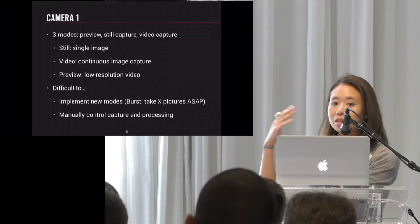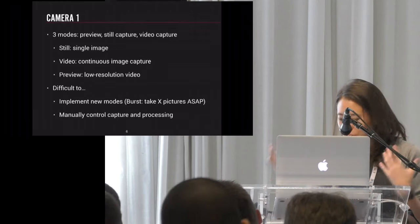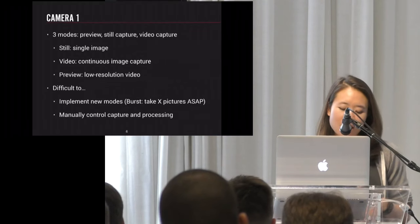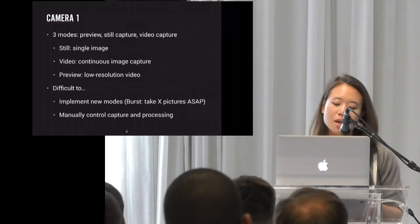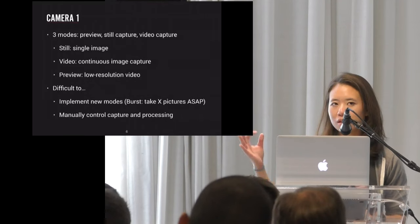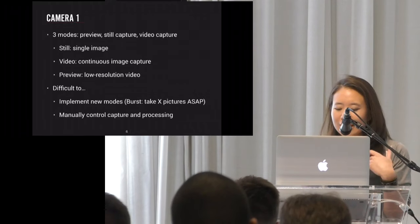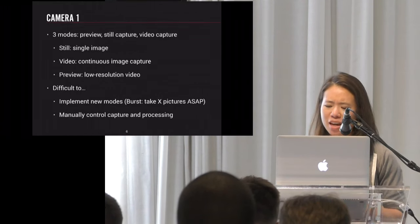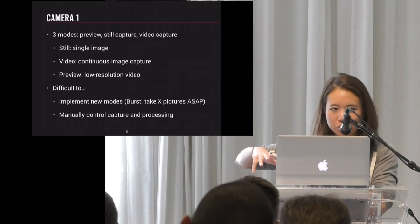Burst mode — the idea that you want to take X number of pictures as soon as possible — isn't really translatable to those three previous modes in Camera 1. Camera 1 was a black box; it's basically not extensible in any meaningful way. Even if you had a camera with manual exposure and manual controls, you couldn't access it. There's no way to change or handle what's going on in that black box. So Camera 2 was really a direct response to these limitations. It's not just an update to the API — it is an entire rework, an entirely different API.